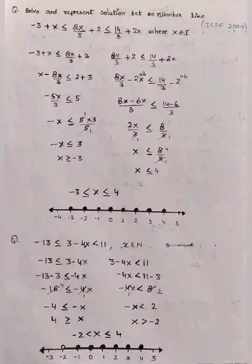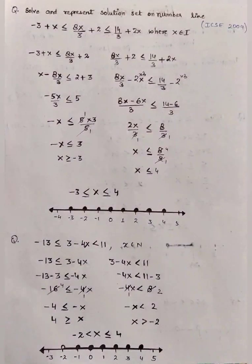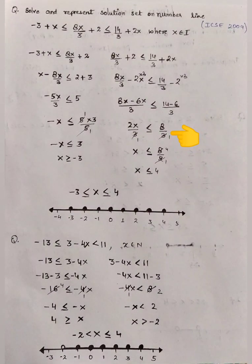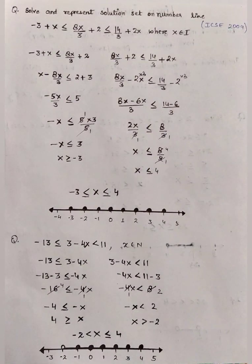Let's solve the second inequation: 8x/3 + 2 ≤ 14/3 + 2x. We collect x terms on one side and constants on the other, and after solving by the LCM method we get 2x/3 ≤ 8/3. The 3s cancel, giving x ≤ 8/2, therefore x ≤ 4.